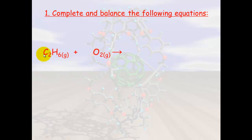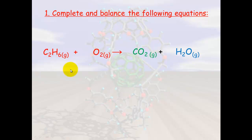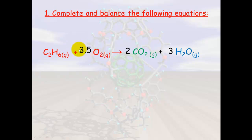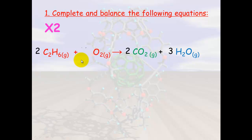You'll be asked to balance and complete combustion equations. Here we have C₂H₆, which is ethane, reacting with oxygen. It always produces carbon dioxide and water. We need to balance the equation: there are two carbons on the left, so we put a 2 in front of CO₂. There are six hydrogens, so we put a 3 in front of H₂O. That gives us seven oxygens total on the right, so we put 3.5 in front of O₂. Since we can't have half molecules, we multiply the entire equation by two, giving us: 2 C₂H₆ + 7 O₂ → 4 CO₂ + 6 H₂O.